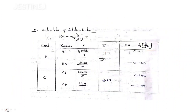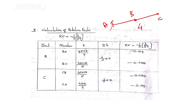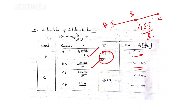The next step is to calculate the rotation factor. There are two joints: B and C. At joint B, the far end A is fixed and far end C is also fixed, so the general equation is 4EI by L. Adding those values gives sigma k equals 7 by 3 EI, and the rotation factor can be calculated. At joint C, similarly the equation 4EI by L applies. The rotation factor is minus 1 by 2 multiplied by k by sigma k — the minus 1 by 2 factor is very important.